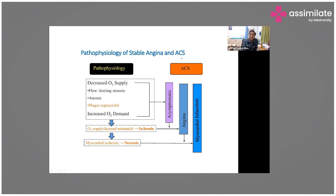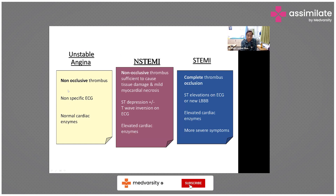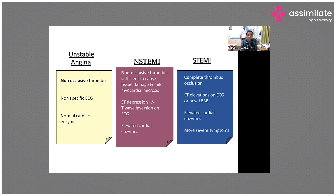You can now understand acute coronary syndrome from history, clinical examination, ECG, enzymes and pathology, and mechanistically. In unstable angina and non-STEMI, there is a non-occlusive thrombus. Unstable angina shows non-specific ECG and normal cardiac enzymes. NSTEMI shows ST depression or T-wave inversion on ECG with elevated cardiac enzymes, and a non-occlusive thrombus sufficient to cause tissue damage. This is non-STEMI.